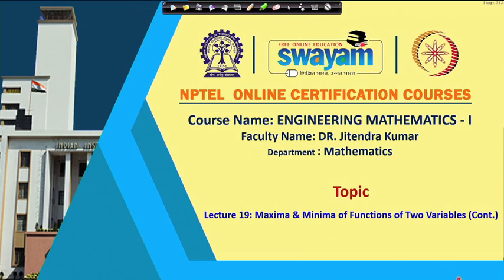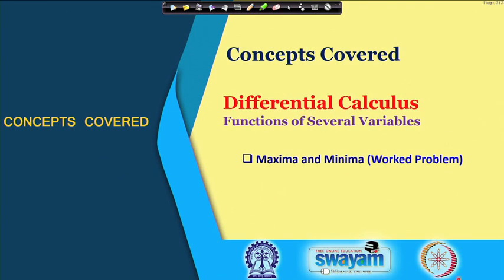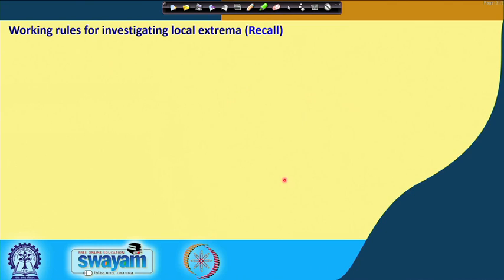Welcome back to the lectures on Engineering Mathematics 1. This is lecture number 19 and today we will continue our discussion on maxima and minima of functions of two variables. In particular, today we will see some typical problems where we will apply the ideas discussed in previous lectures. Just to recall, in the last lecture we investigated the local extrema — the sufficient conditions and necessary conditions.